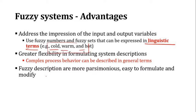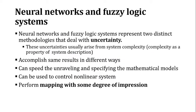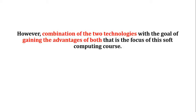If we compare these two techniques - neural network and fuzzy logic - both deal with uncertainty but in different ways, and they give you the same result. Both perform mapping, but if we could add all these advantages into a single form, that could be great. That is the main goal of this soft computing course: to combine these two technologies to gain the advantages of both.